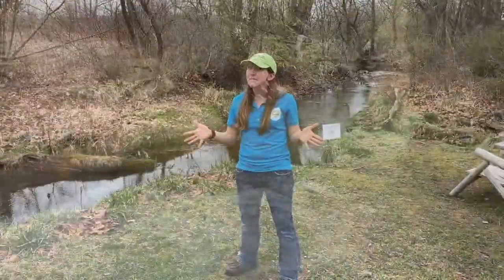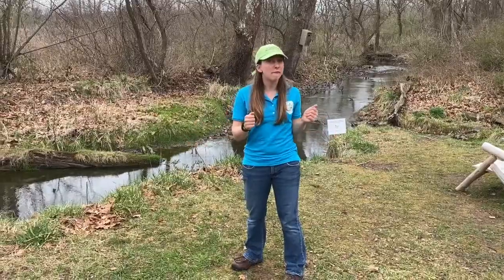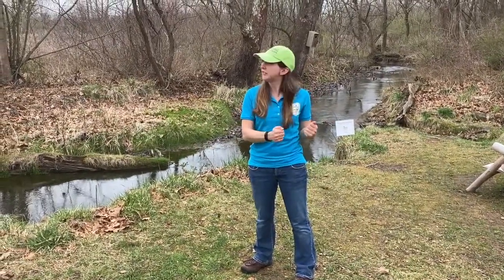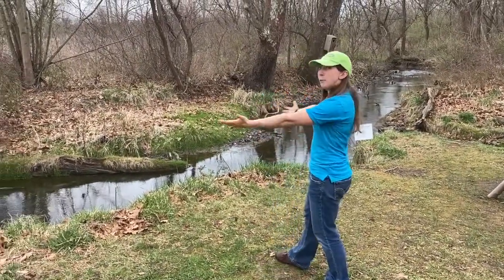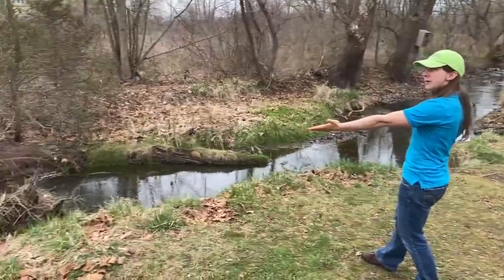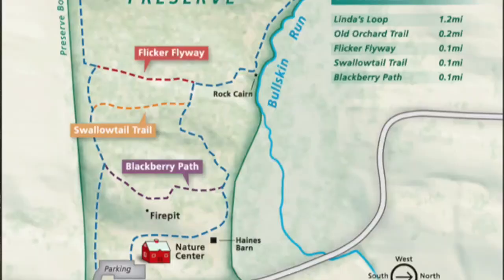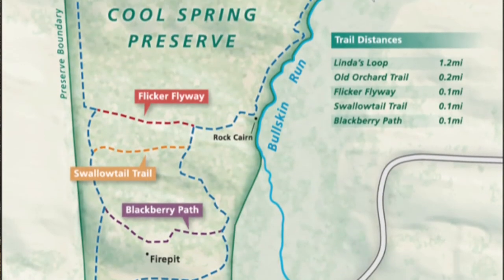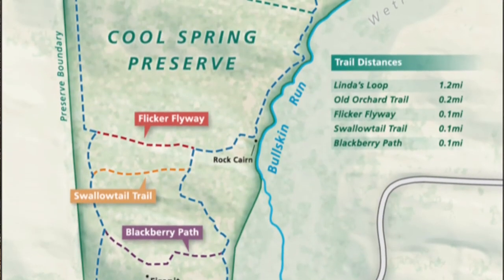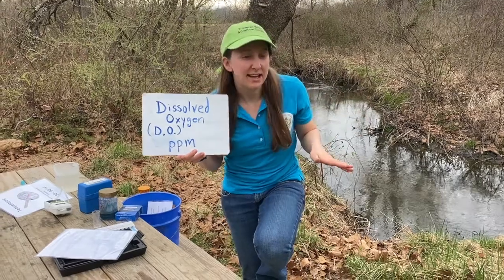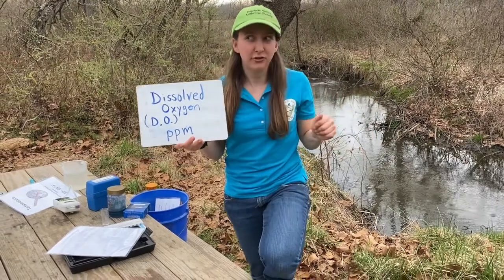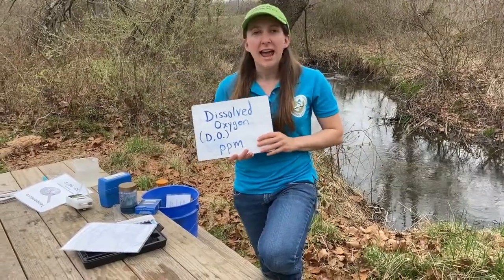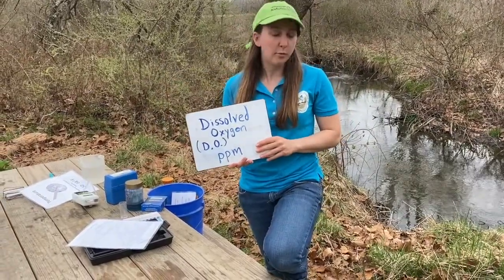Alright everybody, for your virtual field trip we are here studying Bullskin Run. This Bullskin Run flows through our Cool Spring Preserve. We are at the chemistry station of your virtual field trip, and the first test that we're going to do is dissolved oxygen.